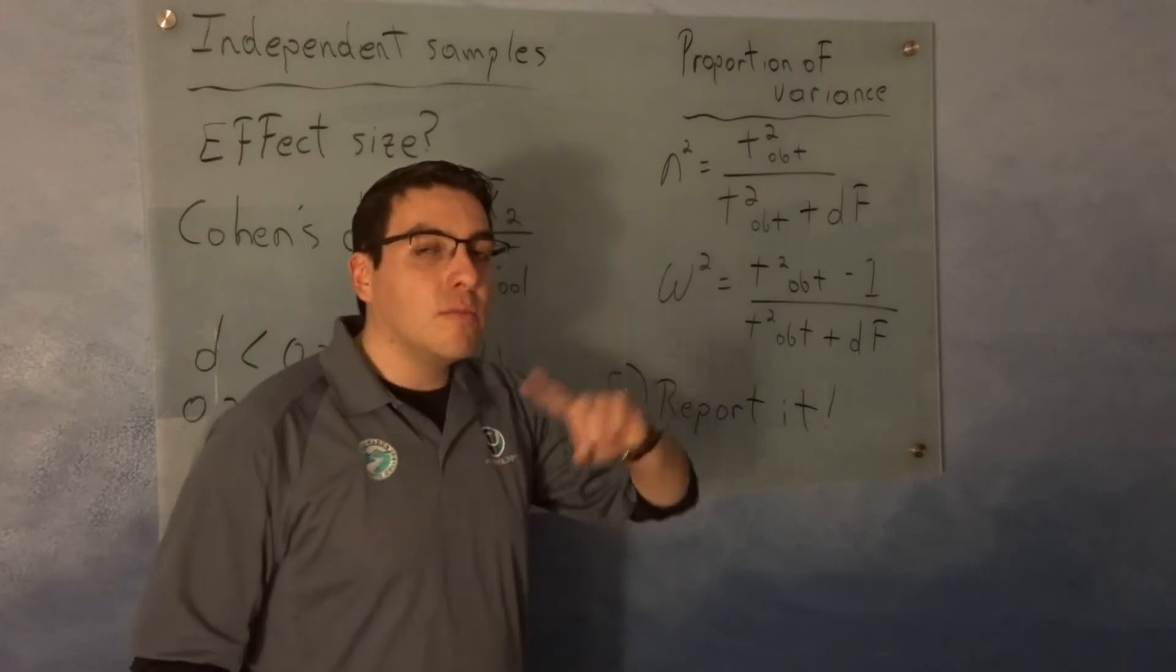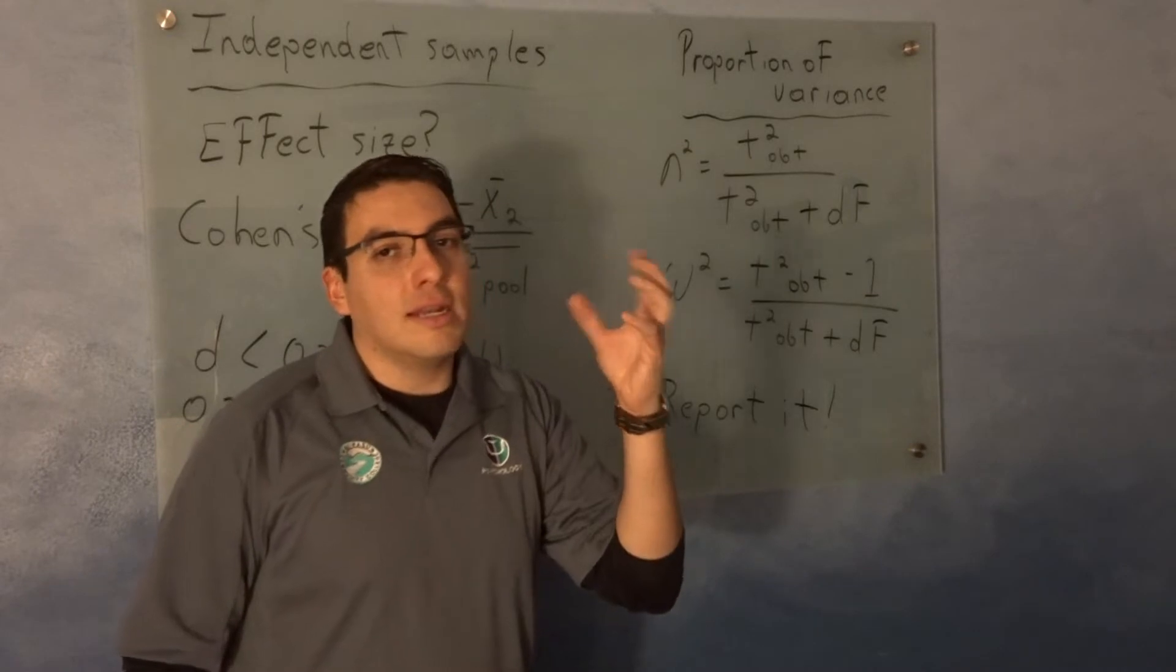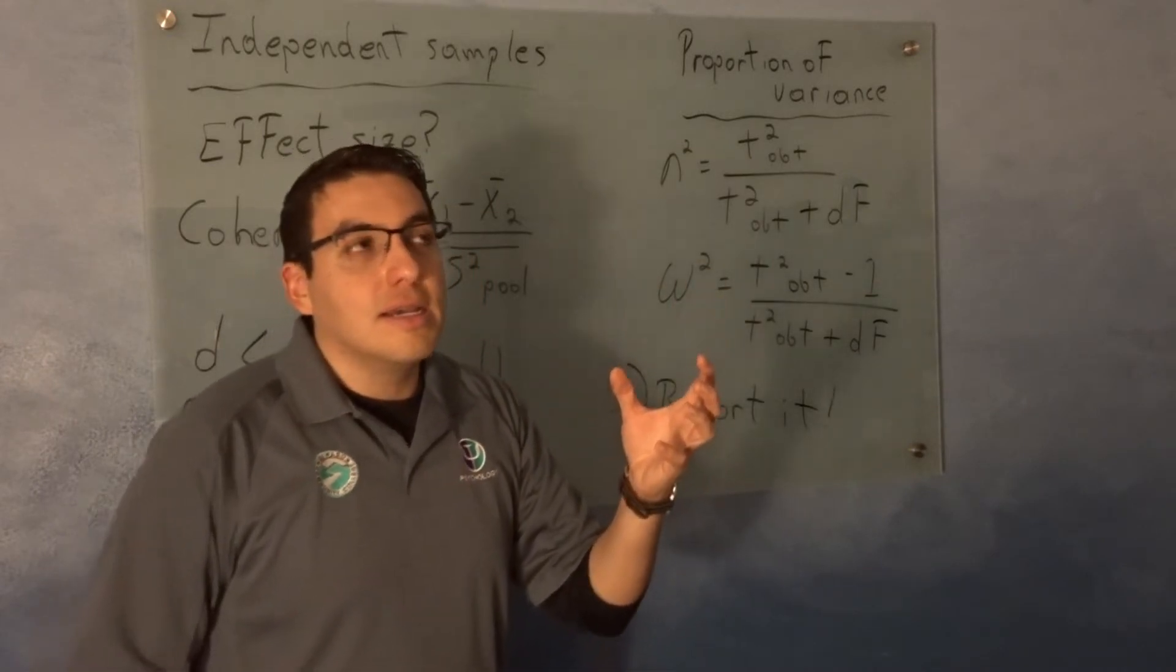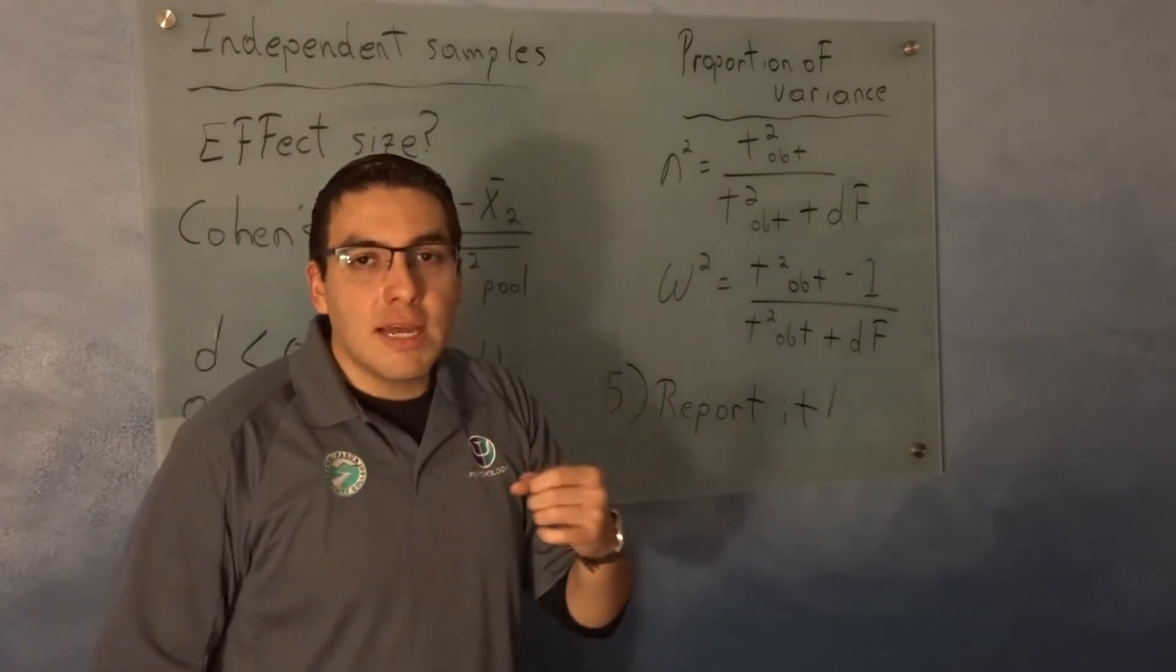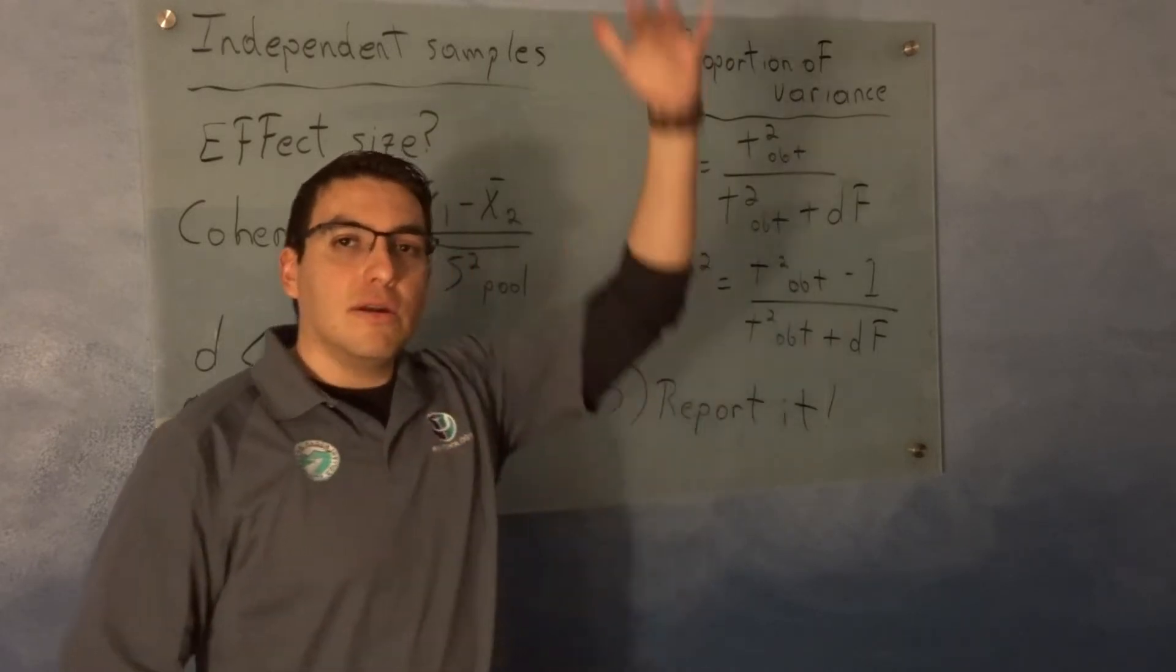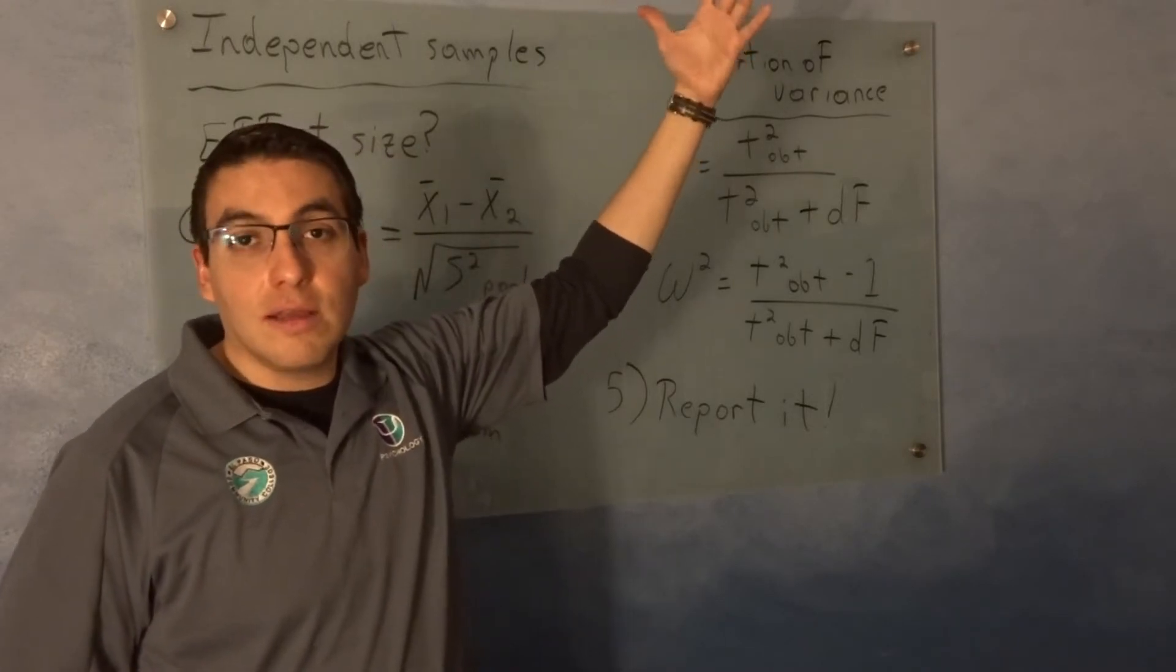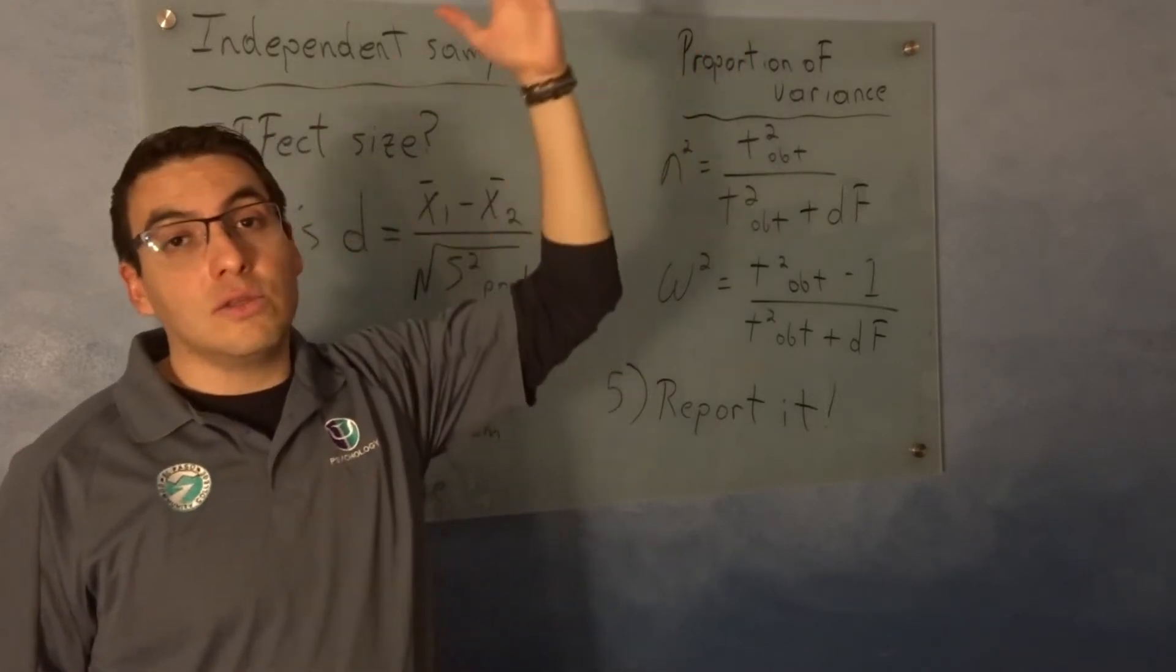This number will never be more than one, because the number that you get is pretty much a percentage. So it cannot go over 100%. It can go in a 20%, 50%, 30%, 60%, the bigger, the more reliable is your effect. The more worthy it is to take into account.